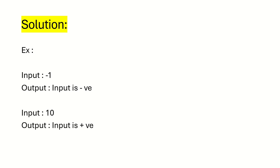In case the user gives an input of minus one, then we have to show the output as 'input is negative'. In case the user gives a positive input of 10, then we have to show a message box as 'input is positive'. Let's solve this question using the Automation Anywhere tool.